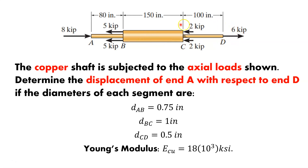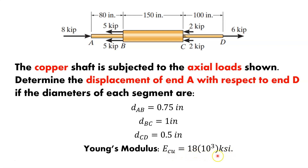What you can see here is a shaft with a lot of information being applied. You've got a copper shaft subjected to axial loads shown — you can see all the arrows representing the loads. Determine the displacement of A with respect to D. Point A is here, D is here, and B and C are in the middle. The diameters of each segment are 0.75 inches for A to B, 1 inch for B to C, and 0.5 inches from C to D. Since it's copper, Young's modulus is 18 times 10 to the 3rd KSI, or 18 times 10 to the 6th PSI.